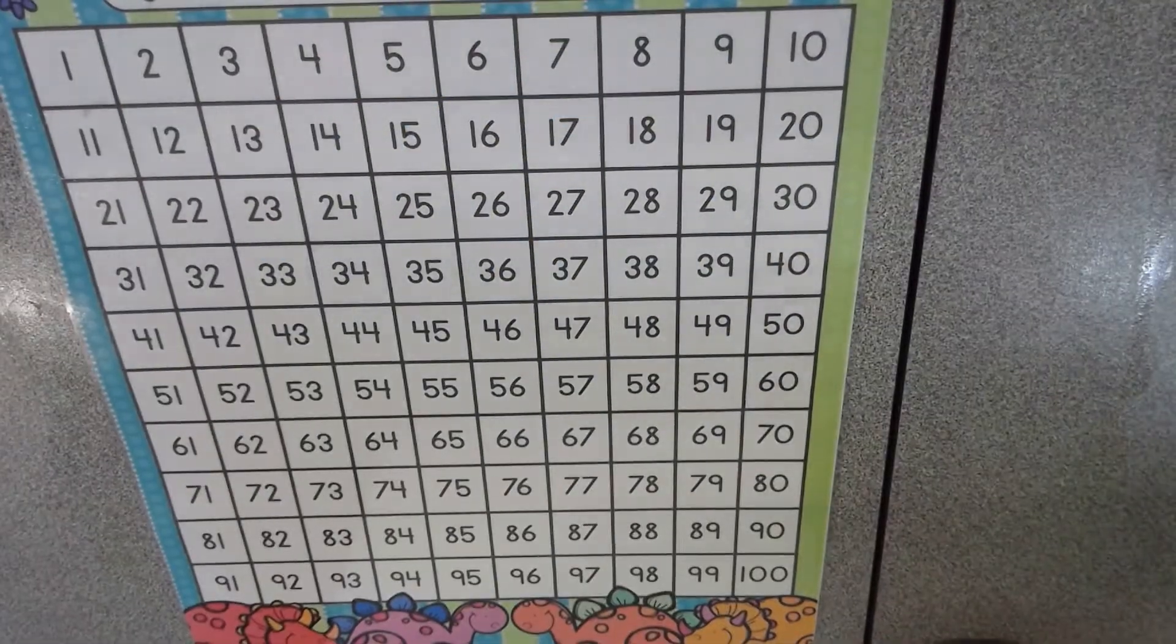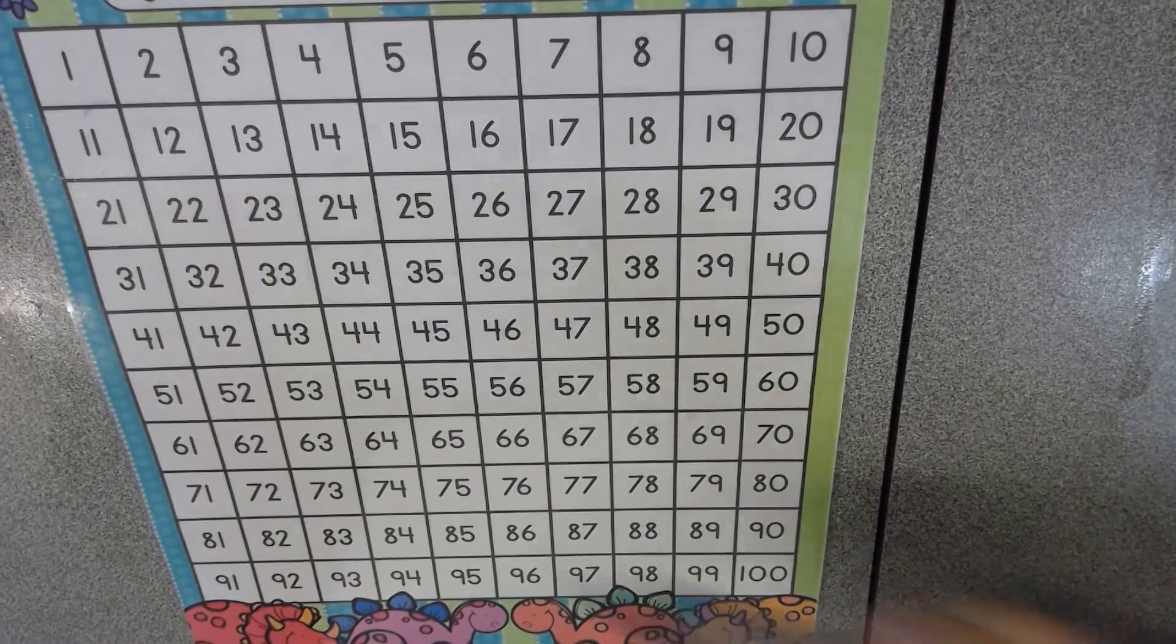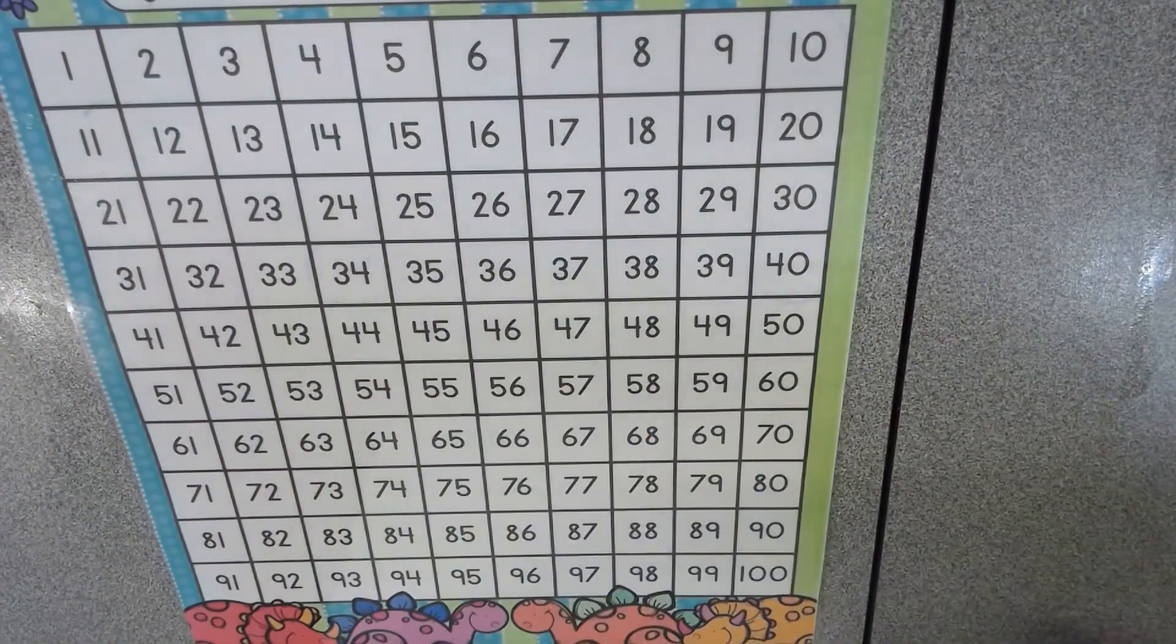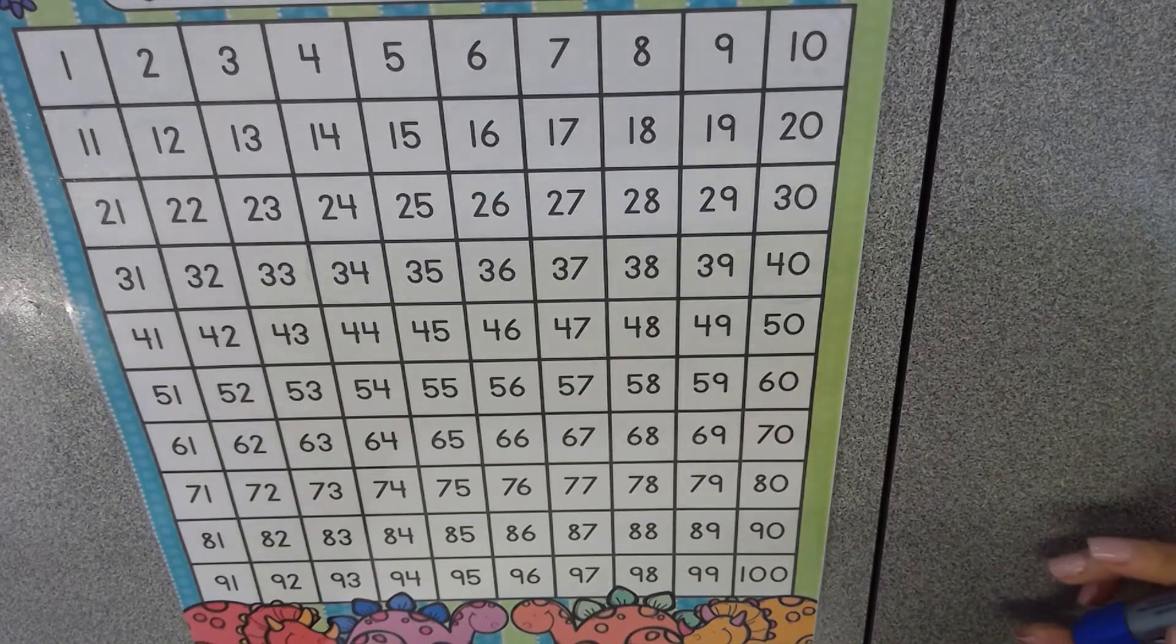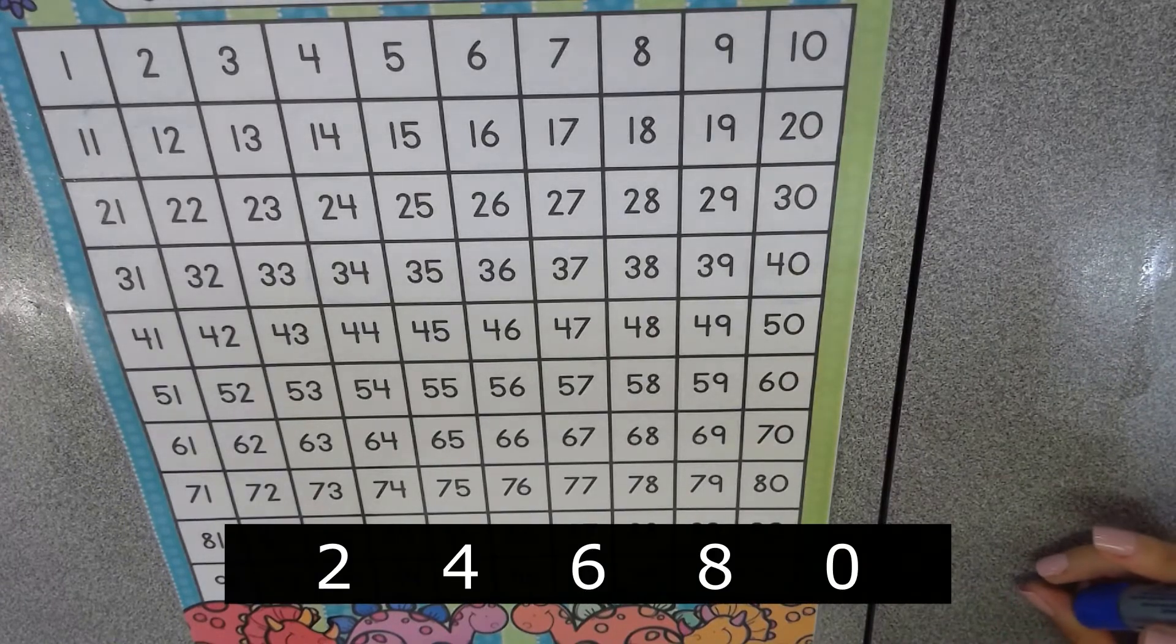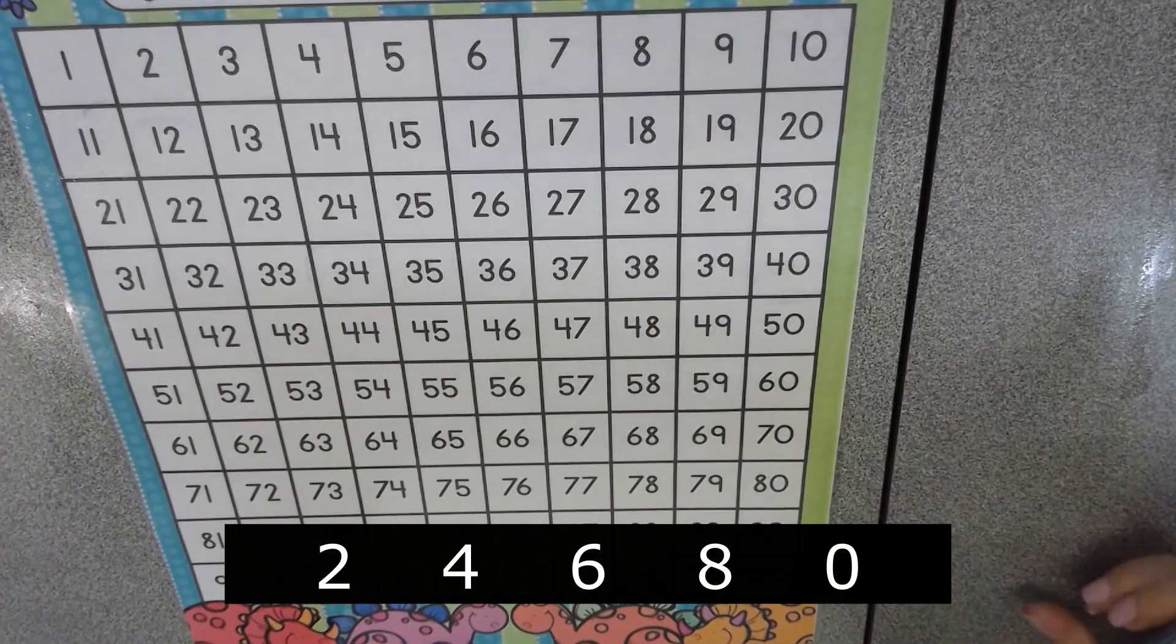Now that we know how to skip count by twos starting at our traditional number of two, we should be able to skip count by twos starting at any number following the repeating pattern of two, four, six, eight and zero.